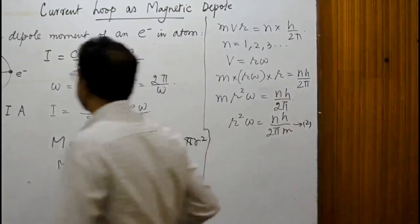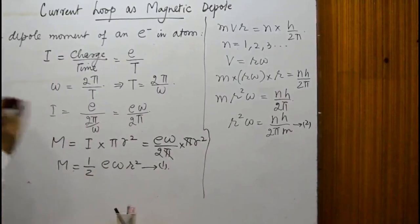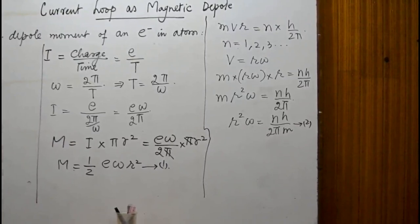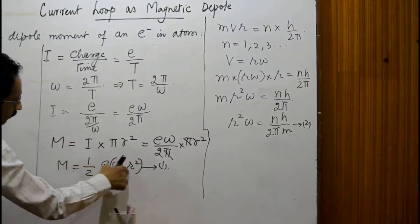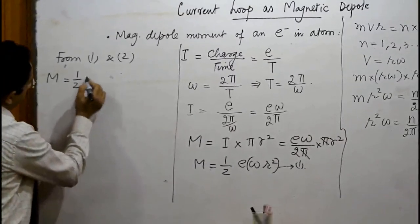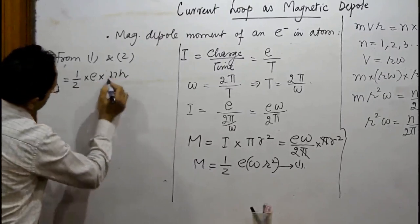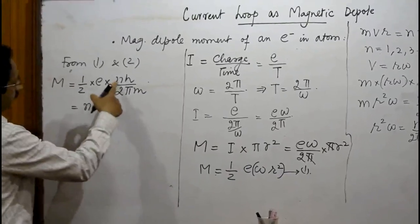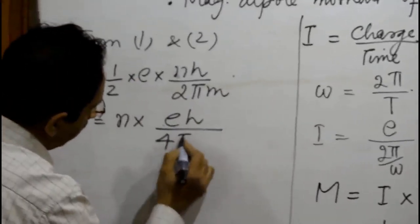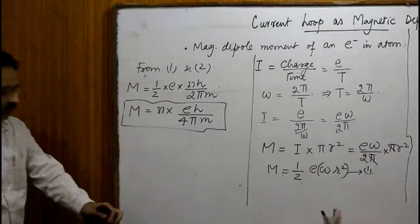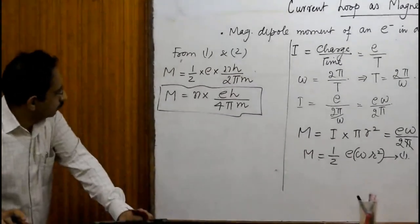Combining Equation 1 and Equation 2: from Equation 2, r²·ω = n·h/(2π·m). Substituting into Equation 1: M = ½·e·(n·h / 2π·m) = n·e·h / (4π·m). So the magnetic moment of an electron revolving in an orbit with principal quantum number n is M = neh/(4πm). This is the result for the magnetic dipole moment of the electron.